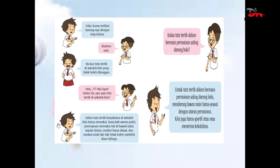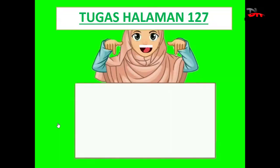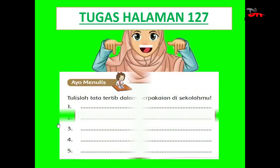Dan untuk tata tertib bermain permainan dorong bola. Kemudian anak-anak dapat berlatih dengan mengerjakan tugas halaman 127 di buku tema, yaitu tentang ayo menulis tata tertib dalam berpakaian di sekolah. Nanti anak-anak dapat mengisikan di titik-titik kolom di bawah ini ya.